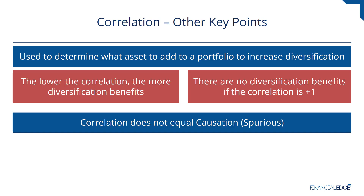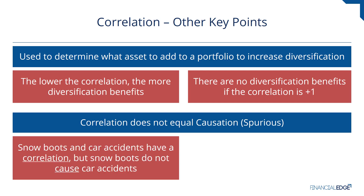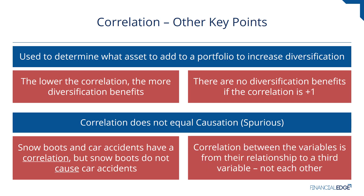Another key point is that correlation does not equal causation. Snow boots and car accidents have a correlation, but snow boots do not cause car accidents. The relationship is pretty obvious — you tend to wear boots when it snows outside, and the number of car accidents also increases when it snows outside. So the correlation between snow boots and car accidents is not from the relationship with themselves, but instead with a third variable — in this case, the snow.